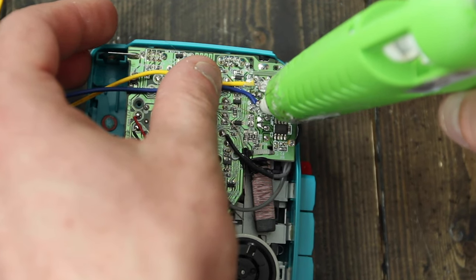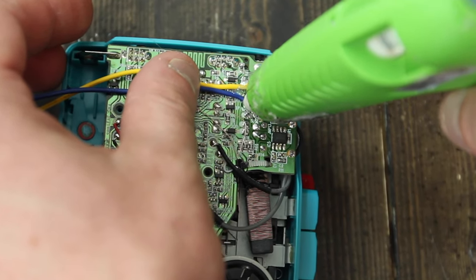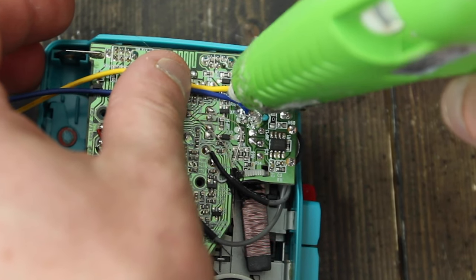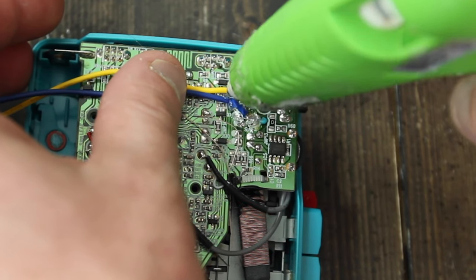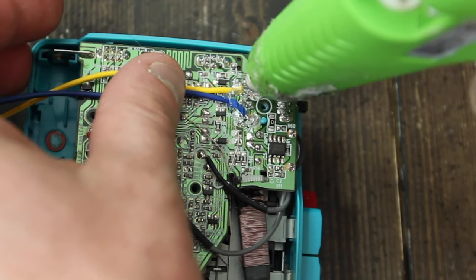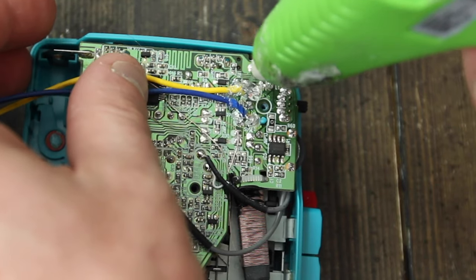You may or may not choose to do this part since it's pretty permanent. But I like to keep some connections nice and secure to the board with hot glue. This protects the solder points from breaking during handling of the wires.